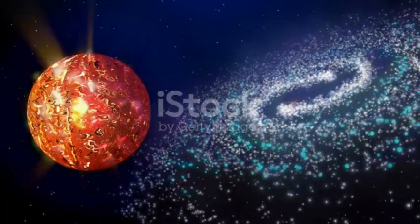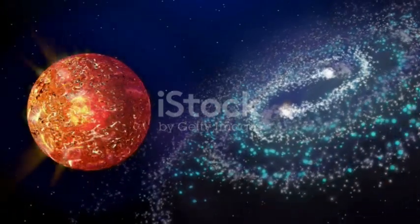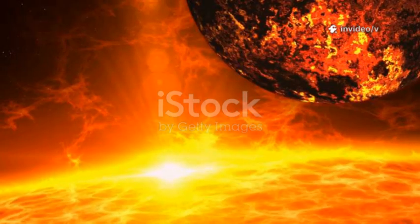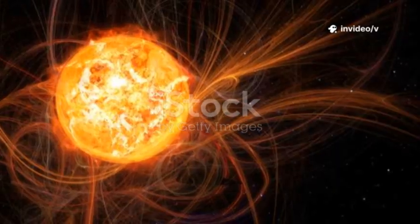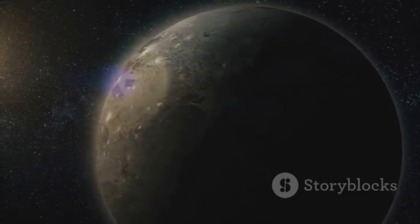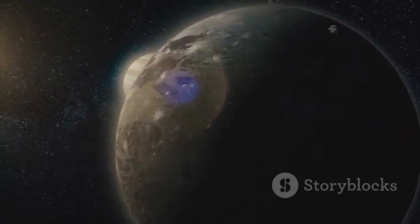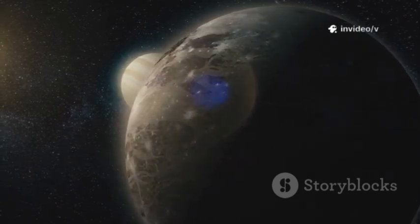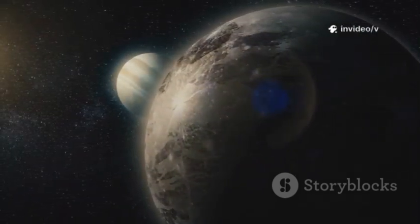Proxima Centauri, though small, is a violent star, unleashing powerful flares and intense radiation. These outbursts are far more frequent and energetic than those from our own sun, bombarding the planet with relentless energy. Over billions of years, this cosmic assault likely stripped Proxima b down to bare rock. The planet's atmosphere, if it ever had one, was gradually eroded away by the star's fierce winds and radiation.